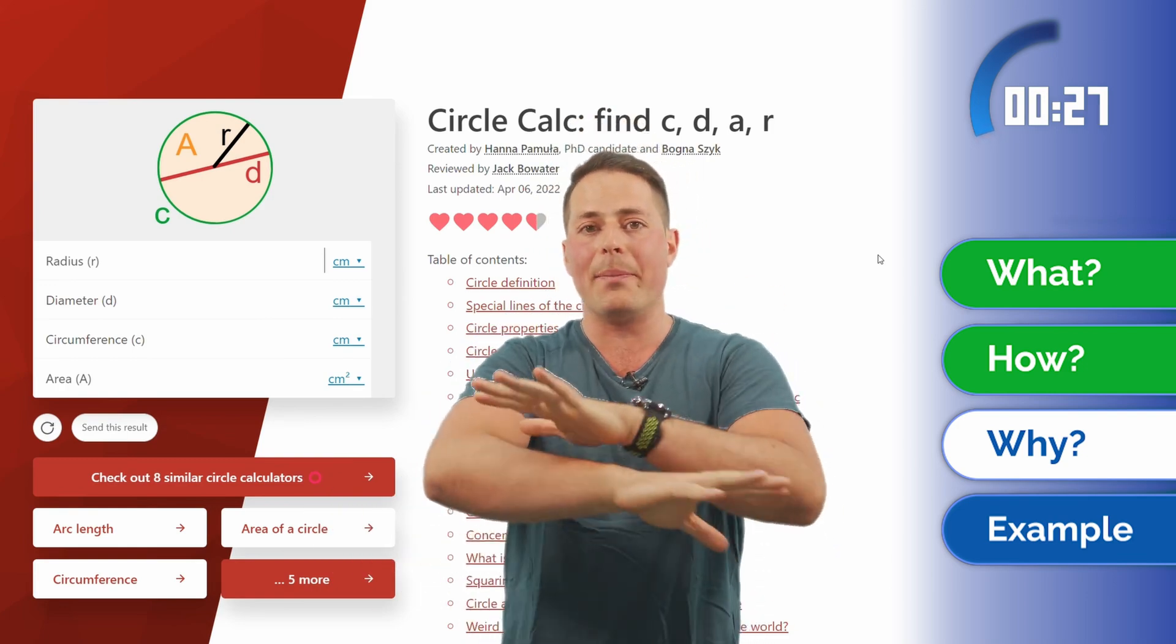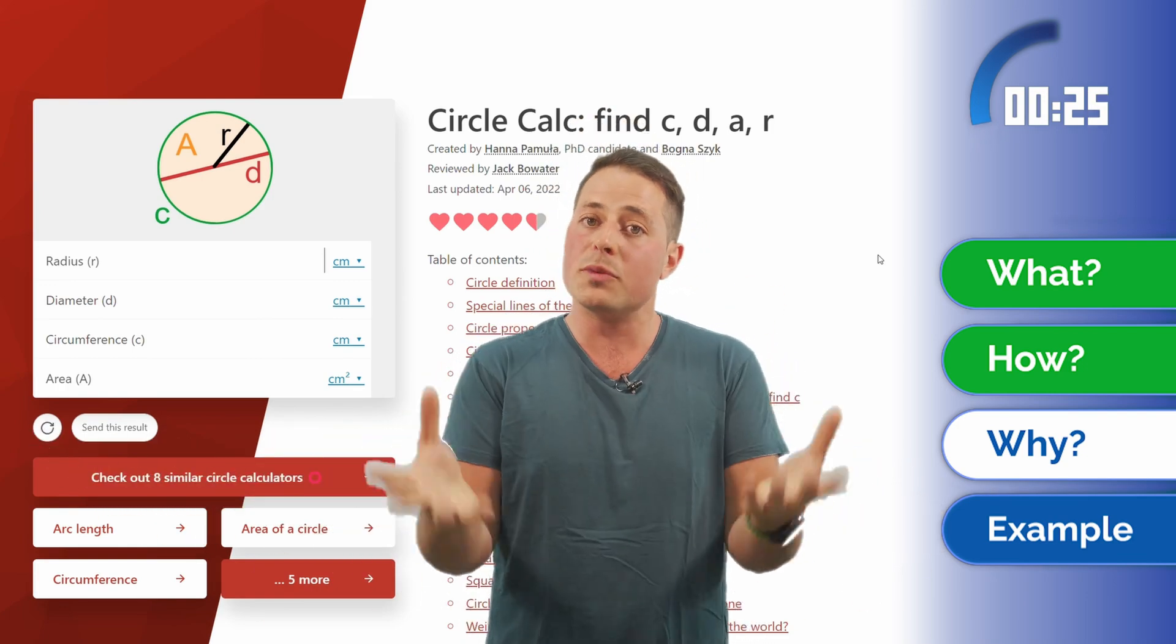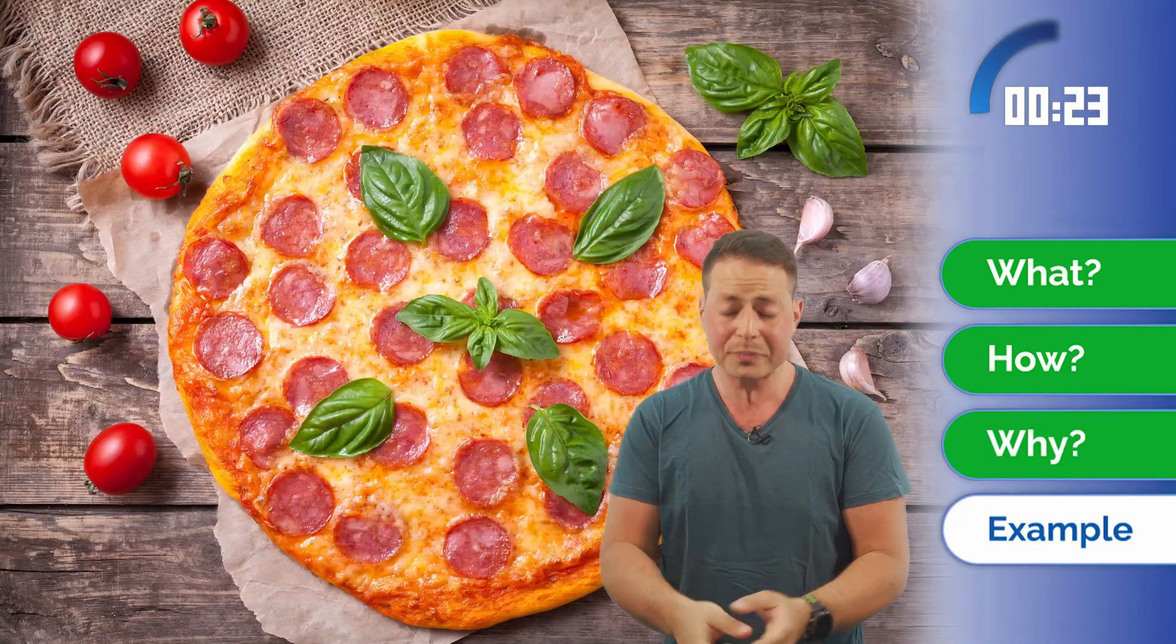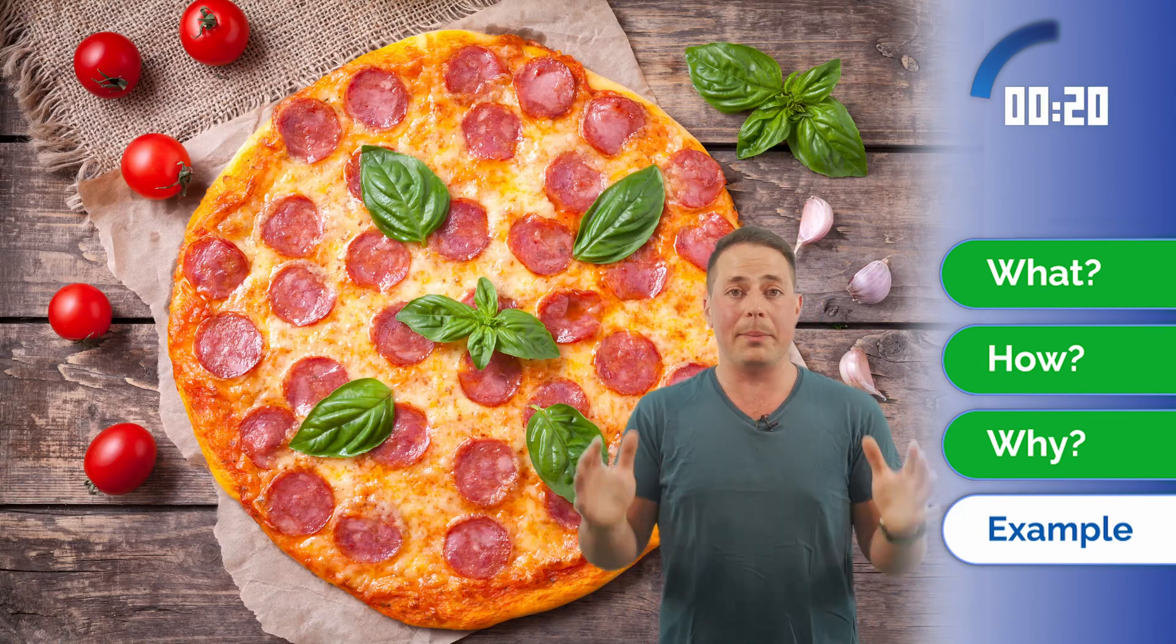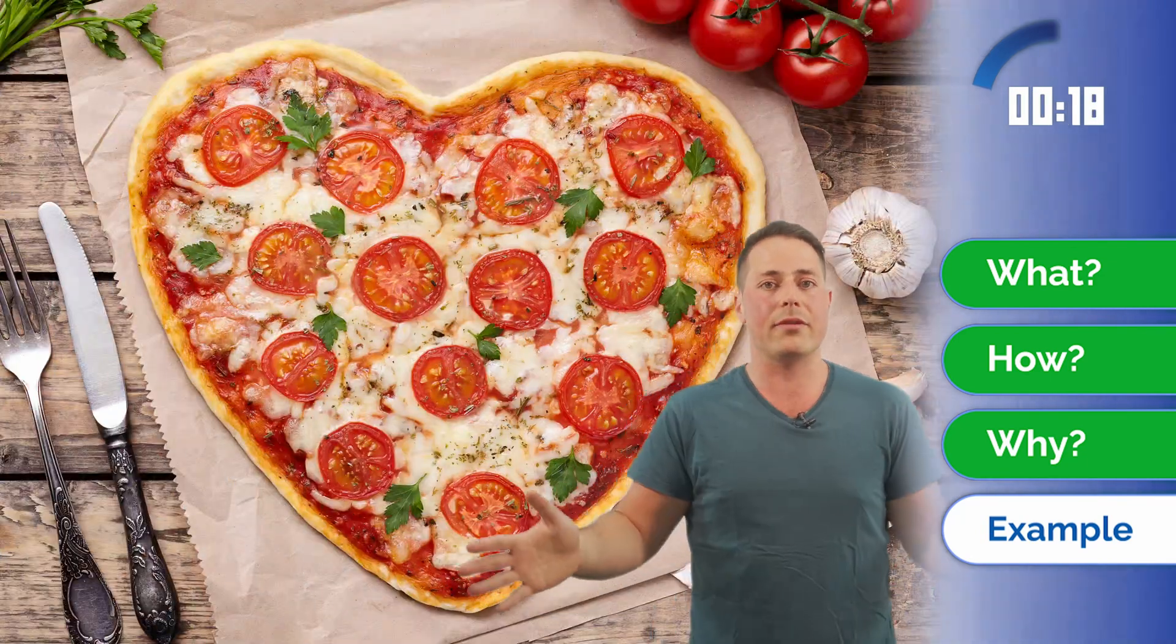But circles appear everywhere in your everyday life, so there's more to it. For example, and this is how you're going to save money, the pizza. The pizza is the most loved circle, and it comes in different sizes.